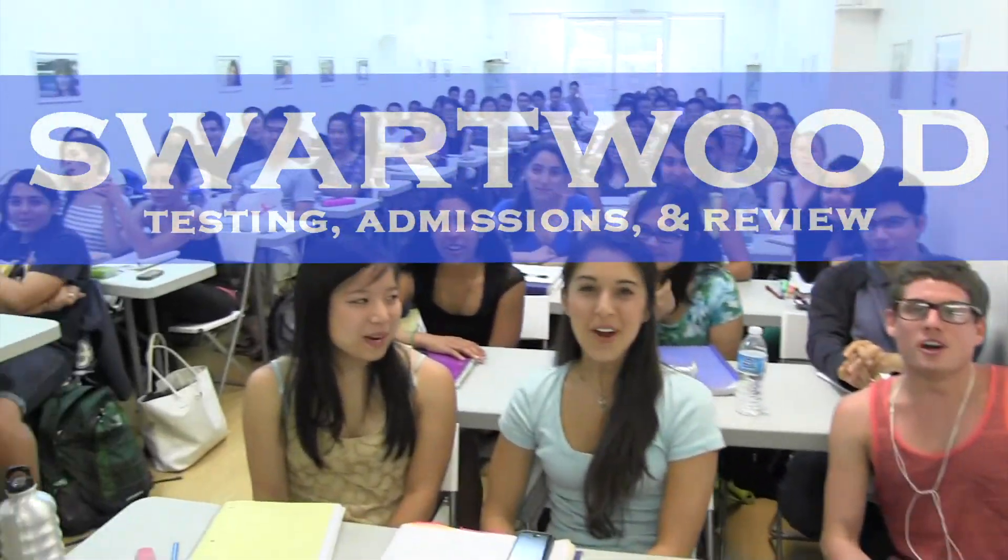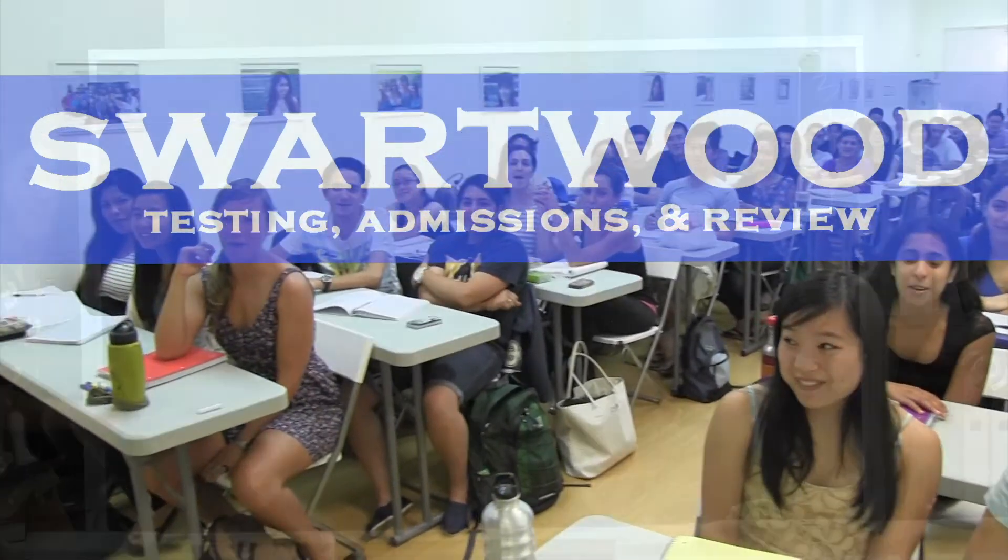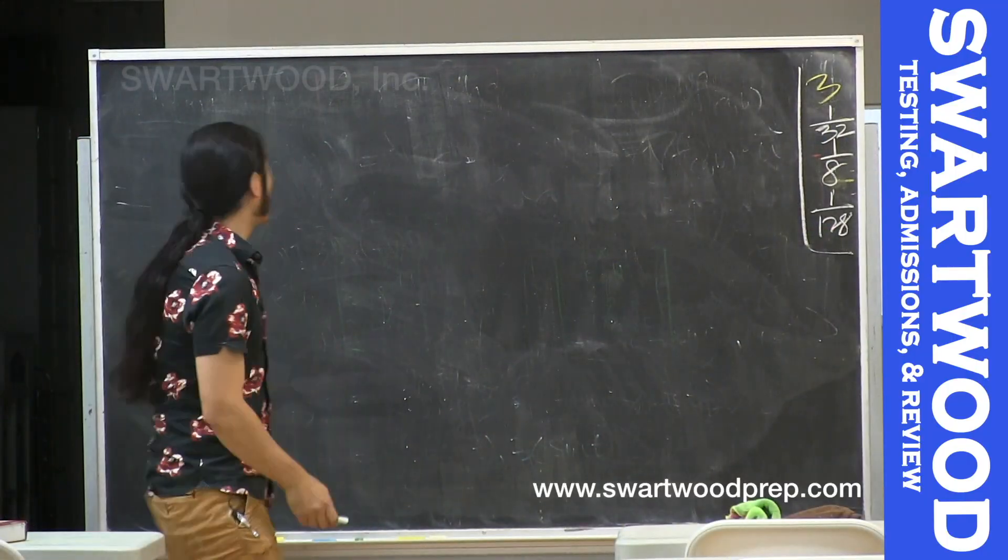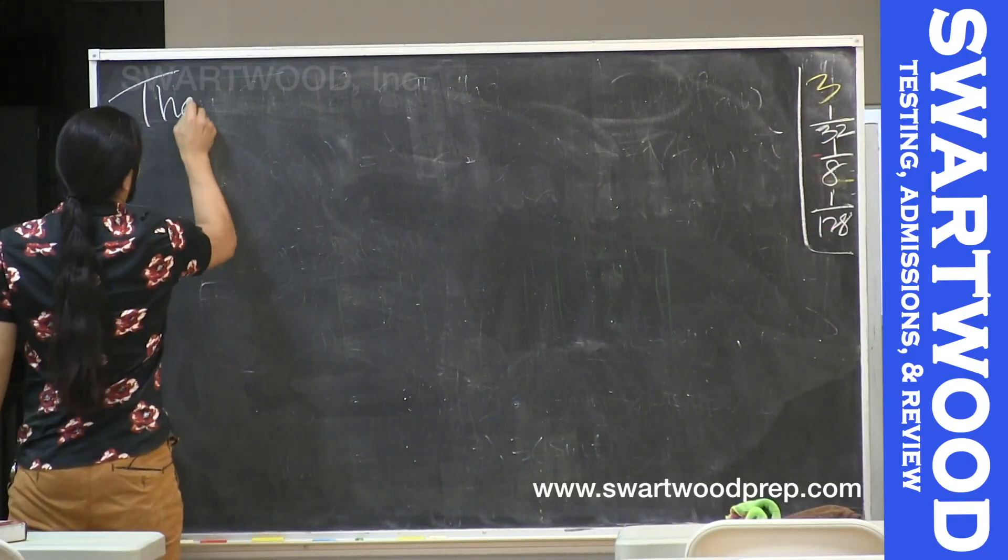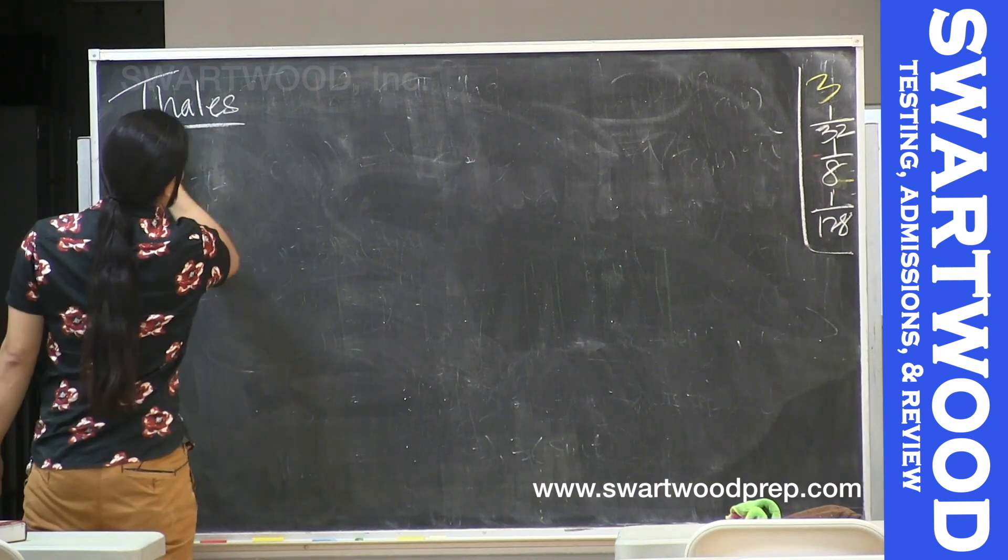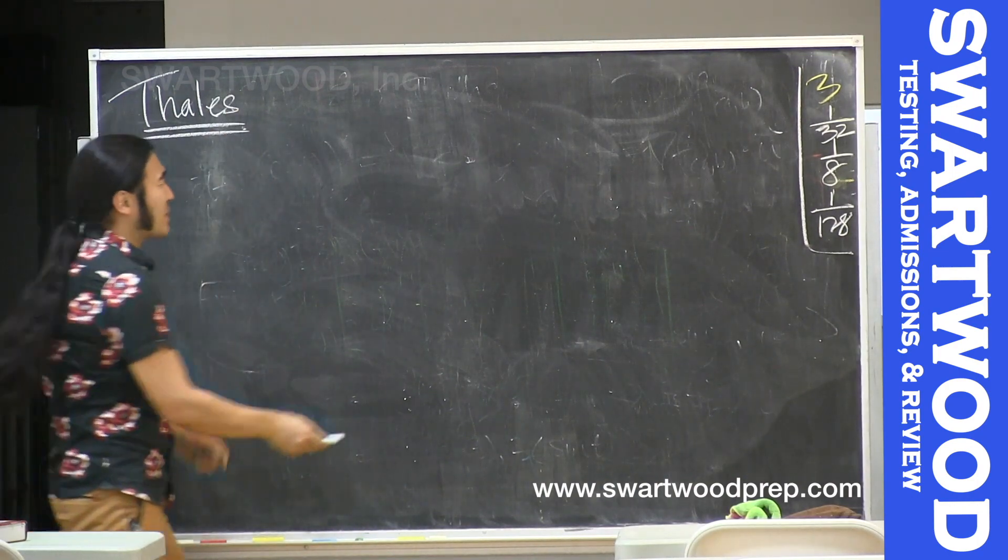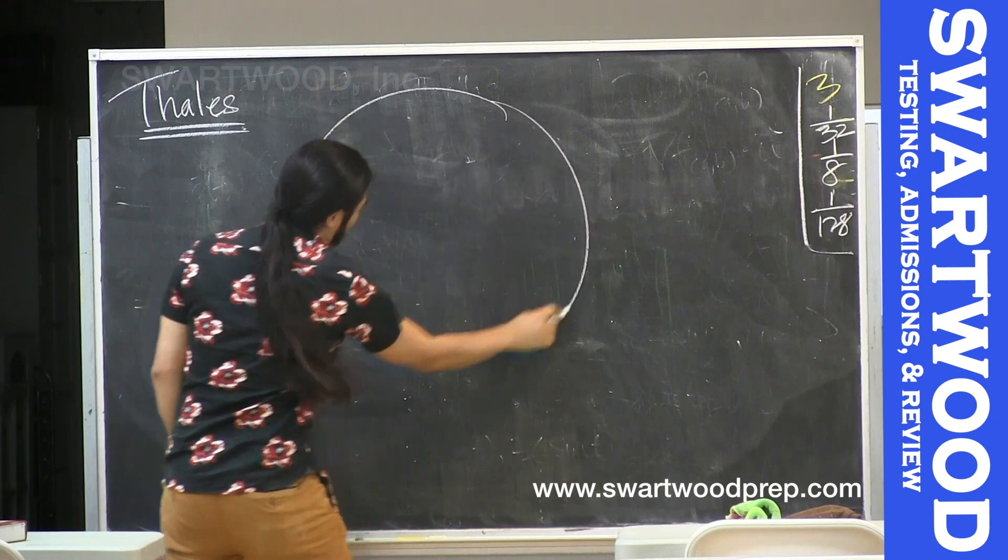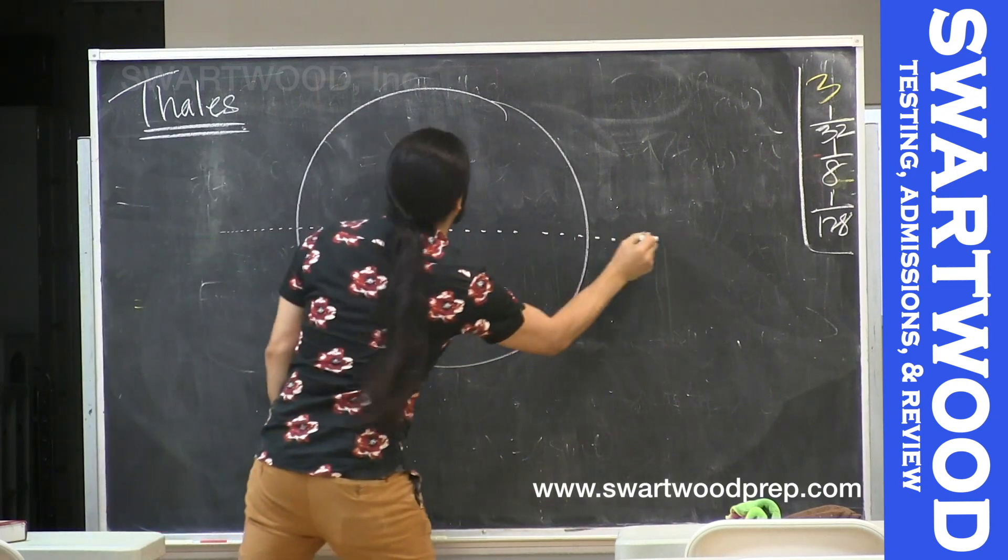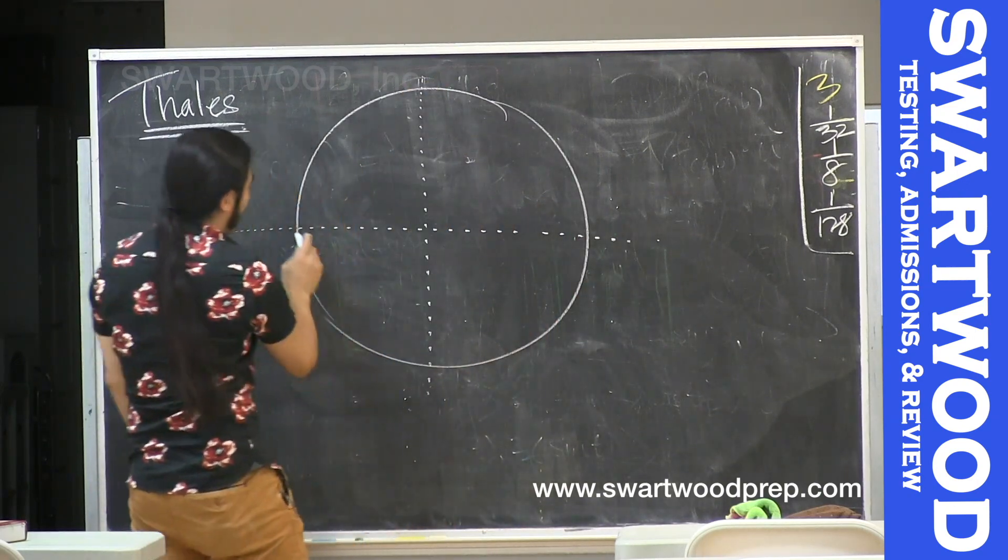So let's do an exercise of vectors where we look at Thales' theorem. That's the famous Greek theorem that basically says if you take some circle like this and we pick some diameter.